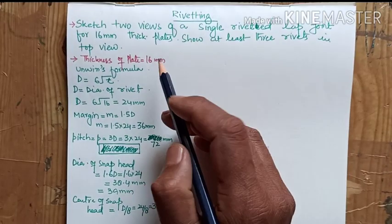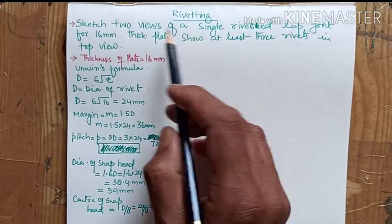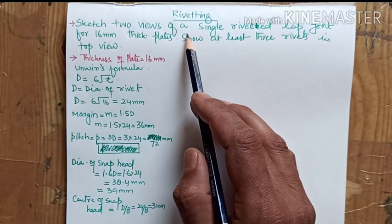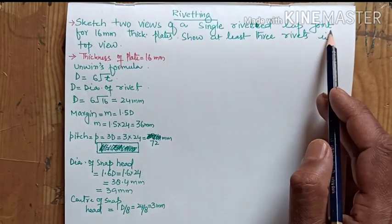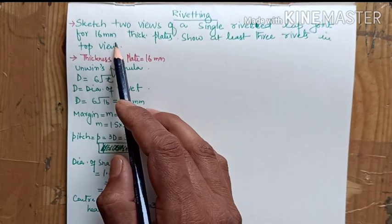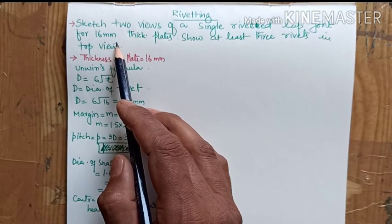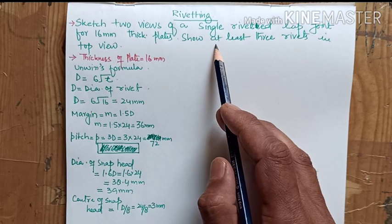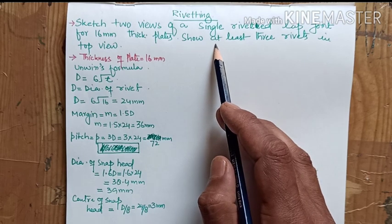Hi students, today we'll do riveting. We have to draw at least two views of a single riveted lap joint of 16mm thick plate, and we have to show at least three rivets in the top view.